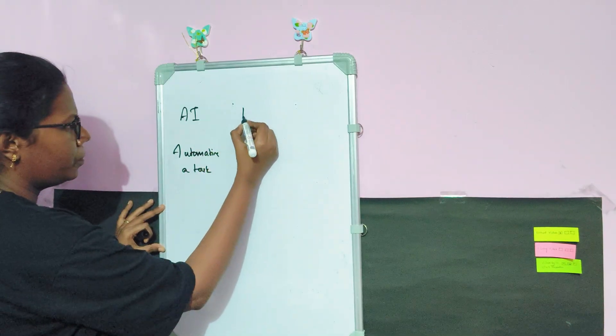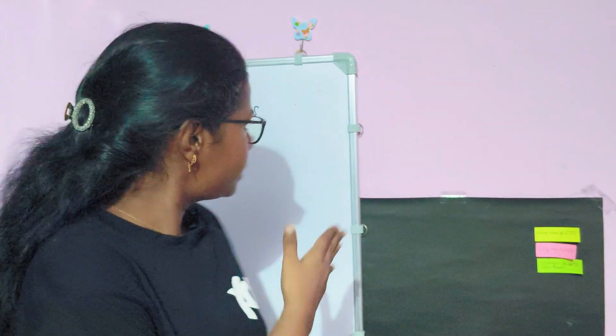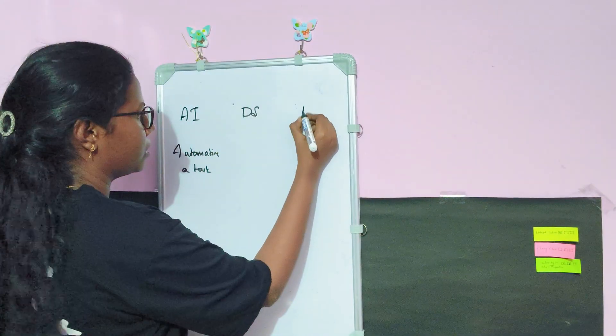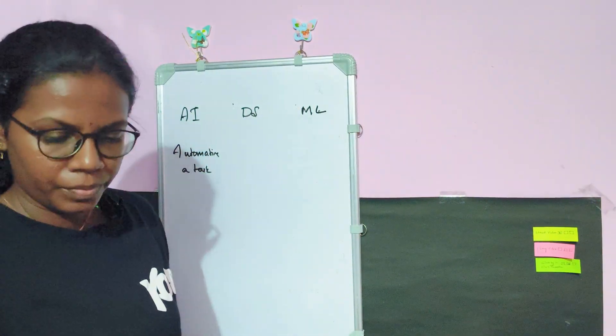So what is data science and what is machine learning? If AI is a technology used for automating a task, what are data science and ML? To understand all three technologies, let me give you one common example that makes it very clear.